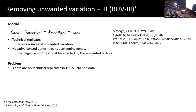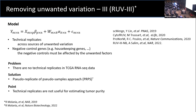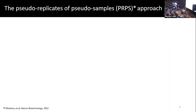If you want to work on TCGA or any other RNA-seq where you don't have any technical replicates, how can we use RUV3? Because RUV3 requires technical replicates to estimate alpha. One possible solution is the PRPS approach, which I'm going to explain with a toy example. What's PRPS? It's pretty straightforward.